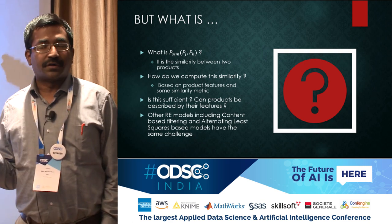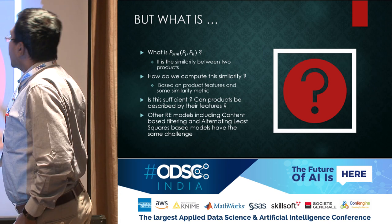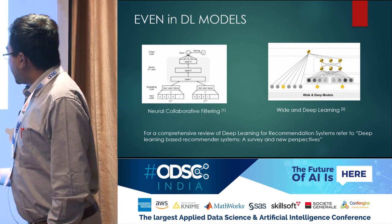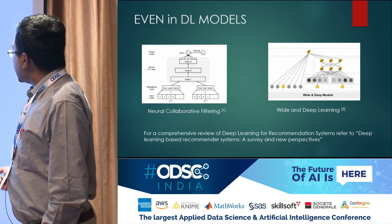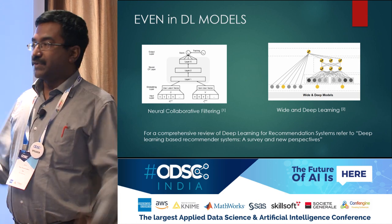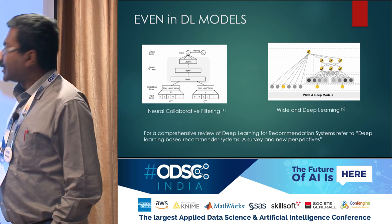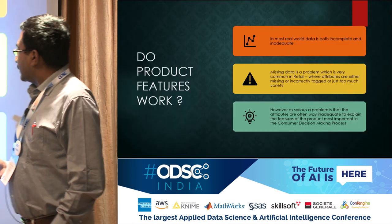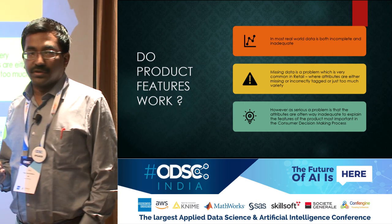This is not true only for collaborative filtering. Other algorithmic techniques like content-based filtering and alternating least squares have the same concept under the hood. Even in deep learning models — and we keep talking about deep learning today — here are two: neural collaborative filtering and wide and deep learning. Both of them use some basics of describing a product by a set of features and then doing computations on top of that. The question is, how does one actually do this?